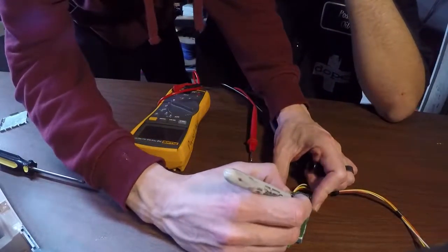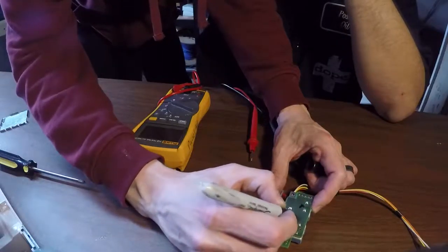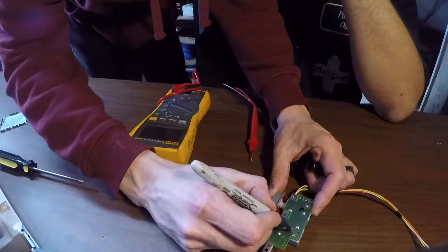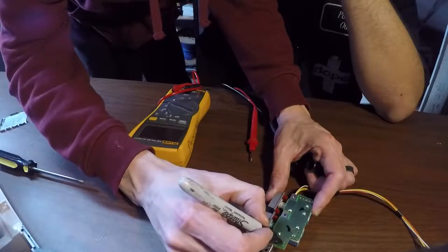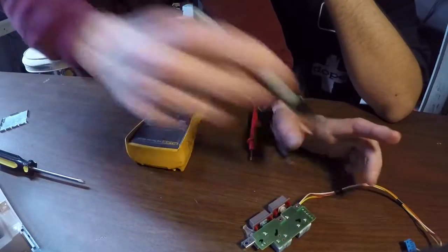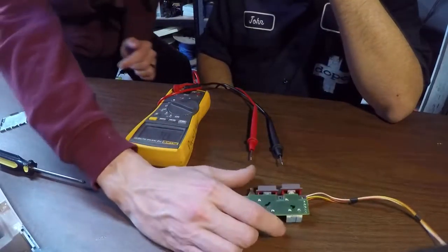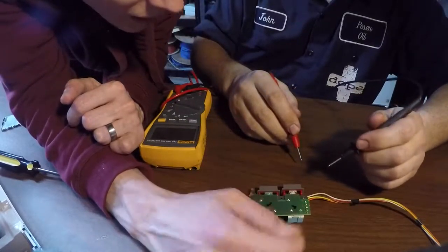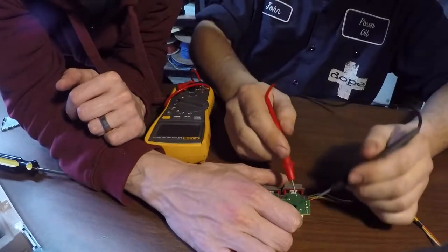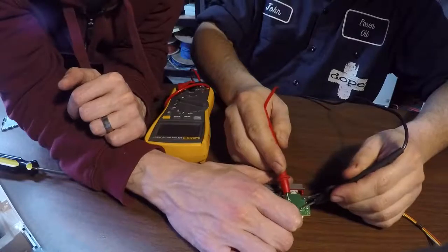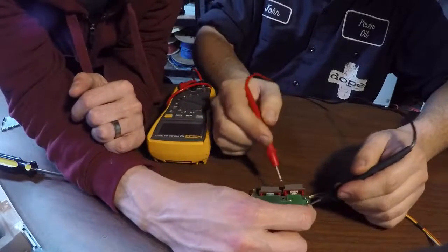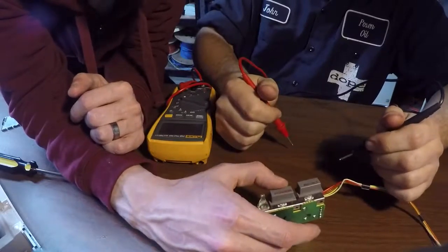I believe these are power, and these are the LEDs. Take the probes and touch, I think it's here and here. When I hit this button, perfect. So that's our circuit for the reset button.